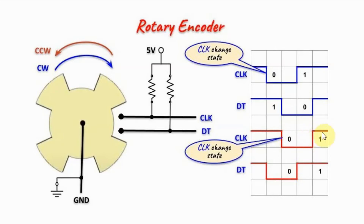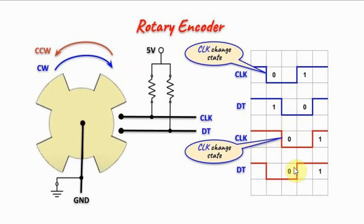Likewise, when the clock changes state, the value of the clock is the same as the value of the data line. So now we can write a program that will detect the change of state of the clock. If the change of state gives us a clock value different from the data line value, then the rotation is clockwise and we can increment a counter. If the clock changes state and the value of the clock is the same as the data line, then the rotation is counter-clockwise and we can decrement the count.